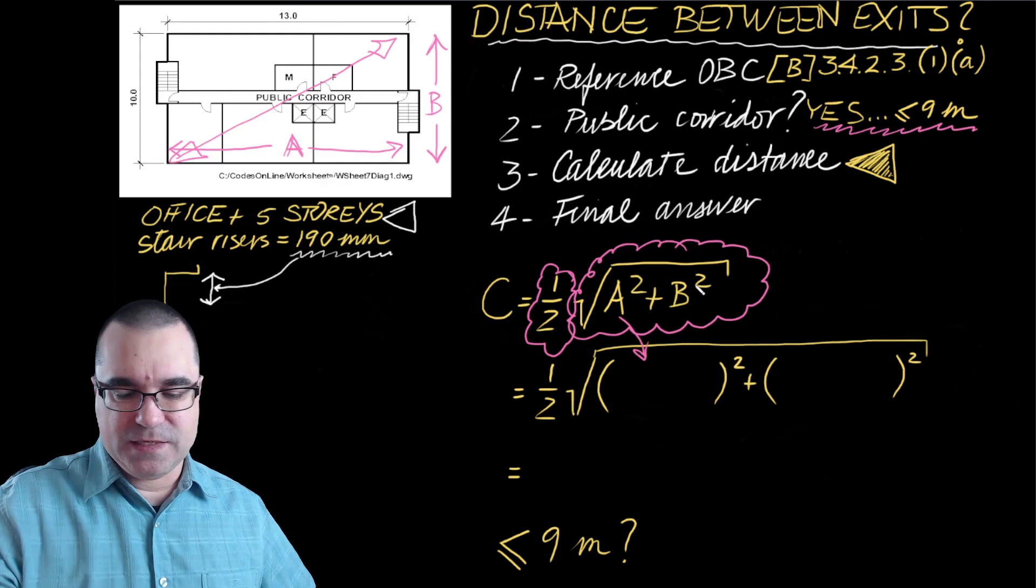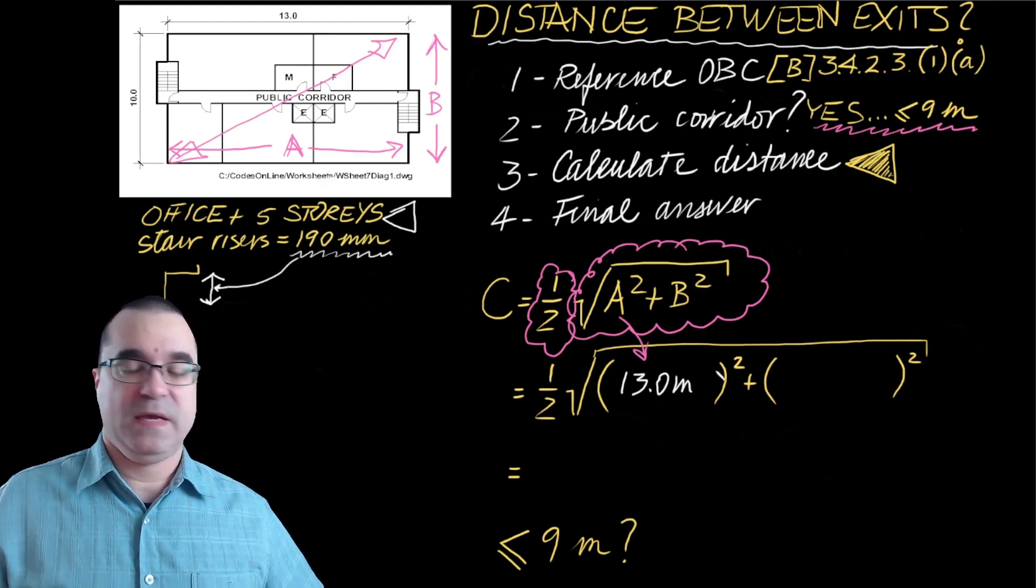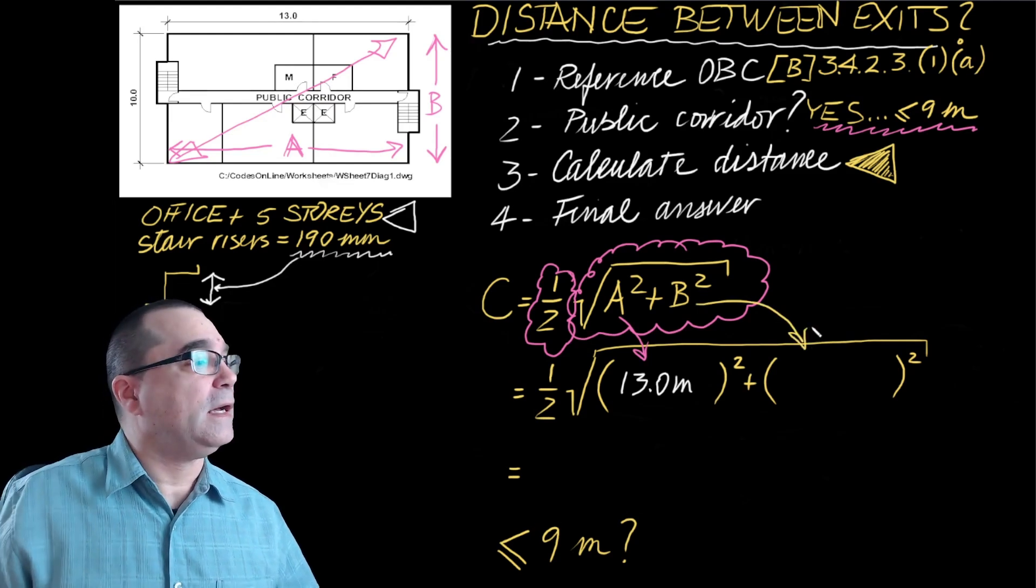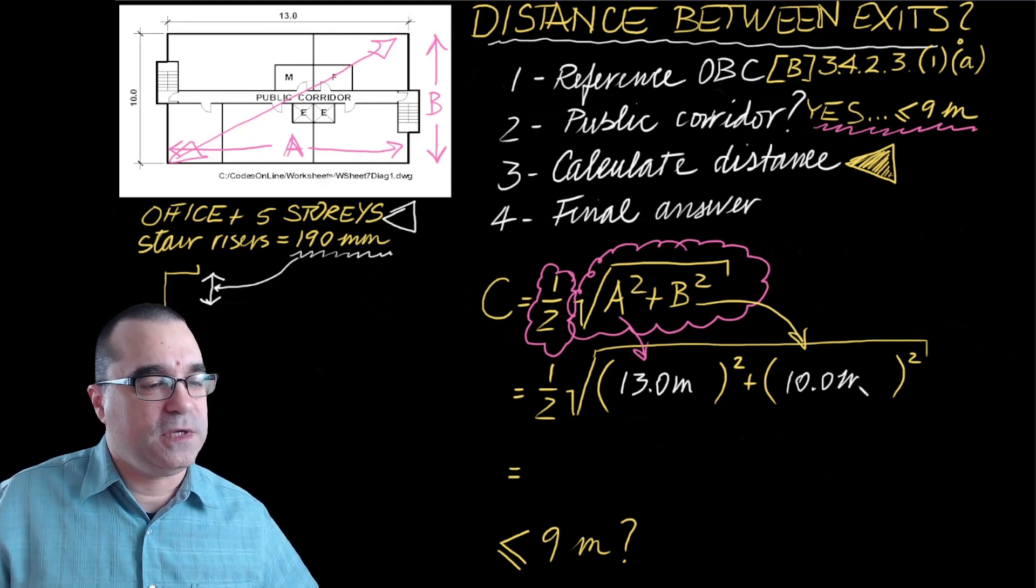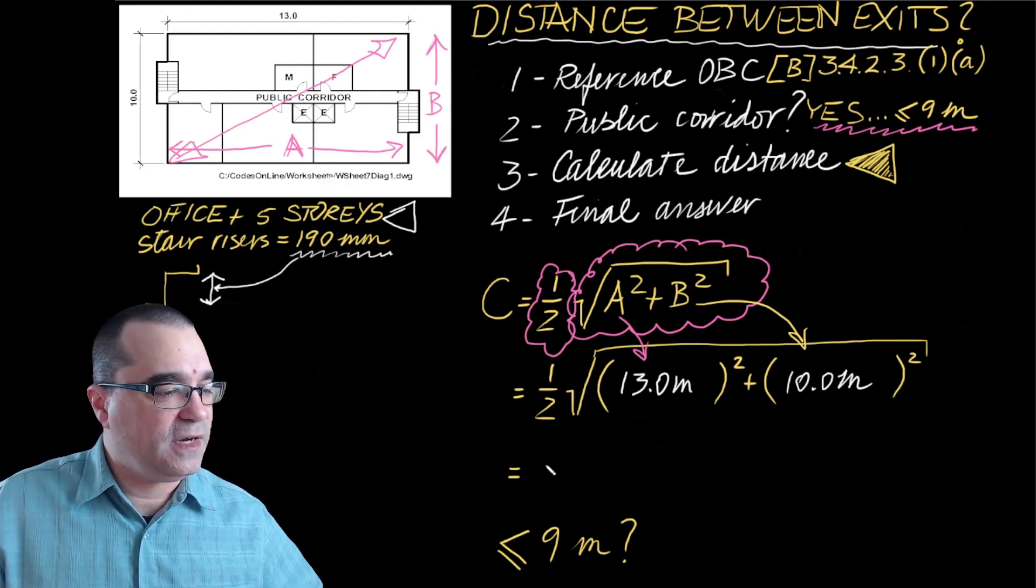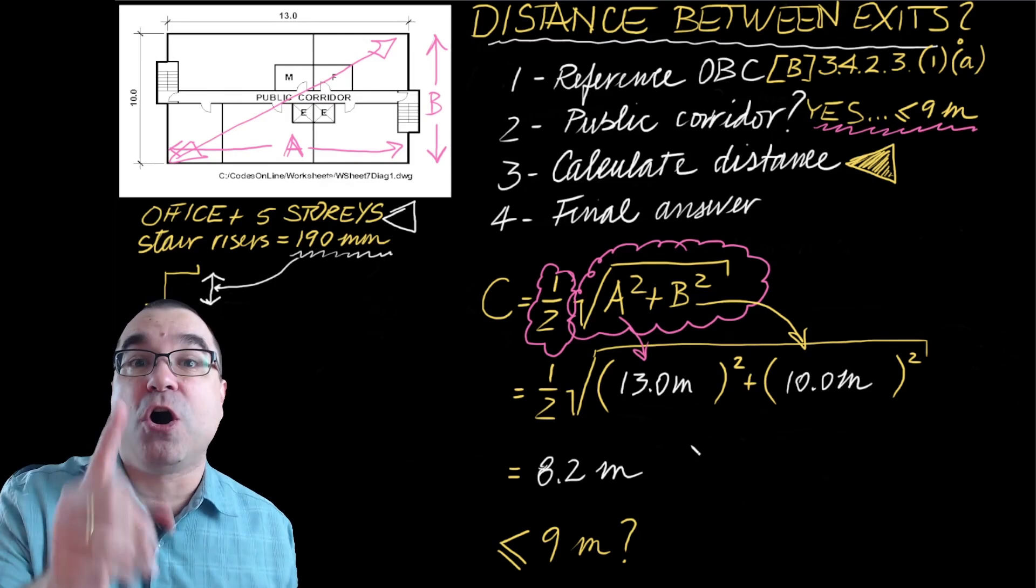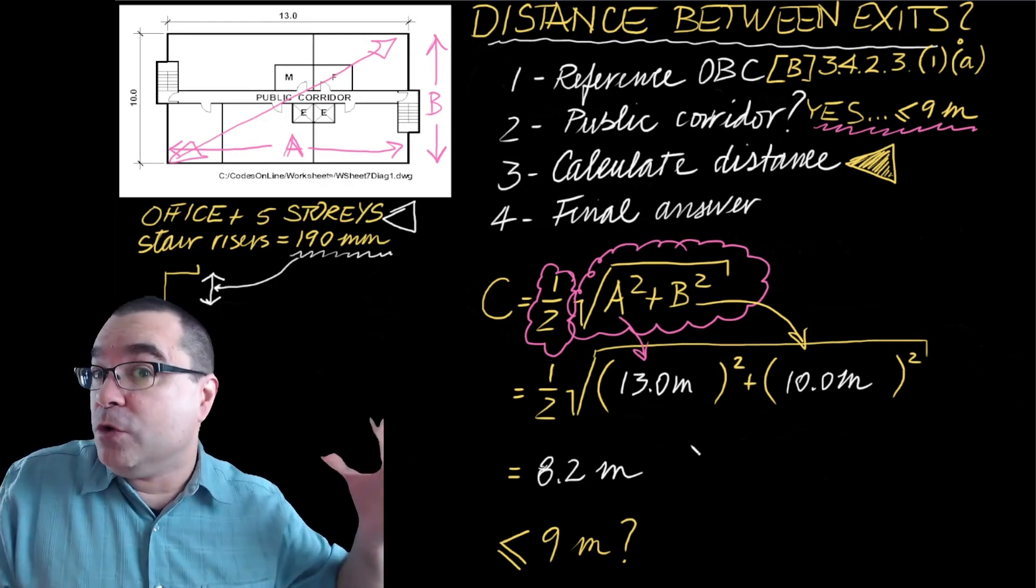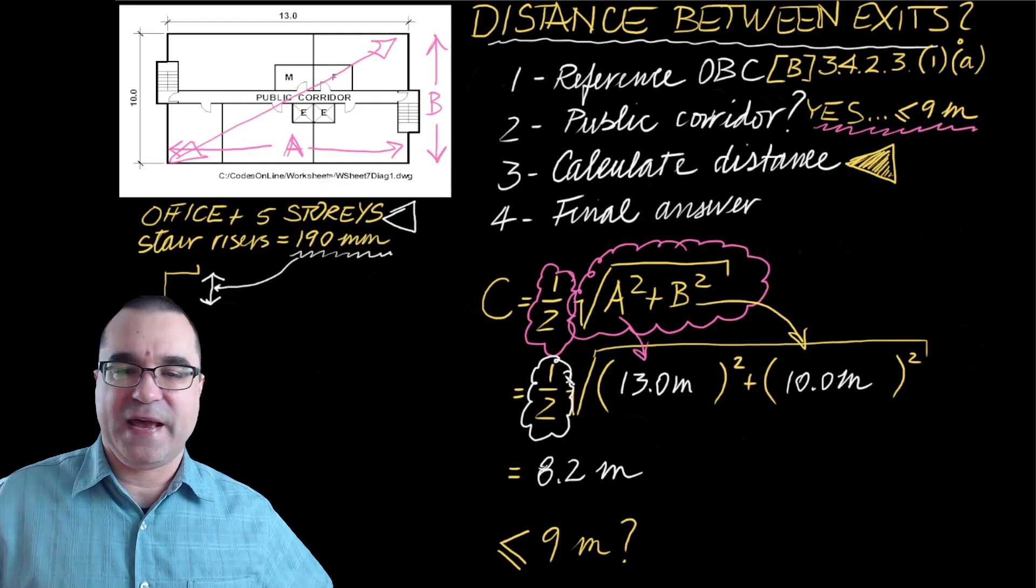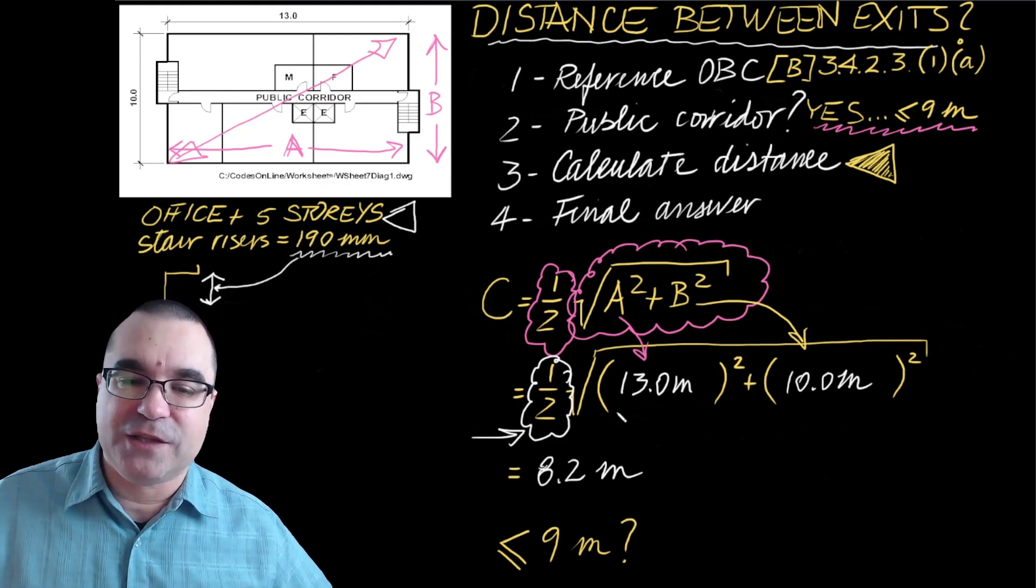So let's fill in the blanks. Dimension A is equal to 13 meters. Dimension B is equal to 10.0 meters. When I do the calculation, I get 8.2 meters. Here's the common mistake you could make if you're new at the Ontario Building Code: forgetting about this one-half. You have to remember to divide by two to get 8.2 meters.